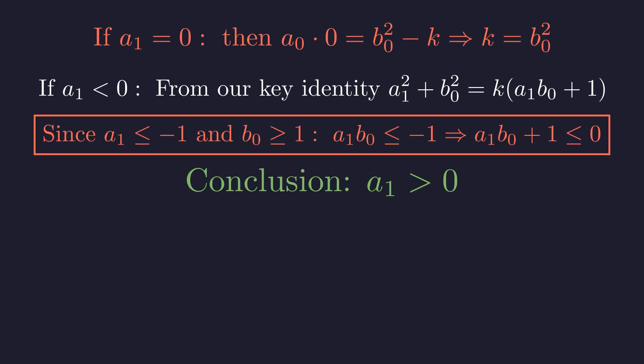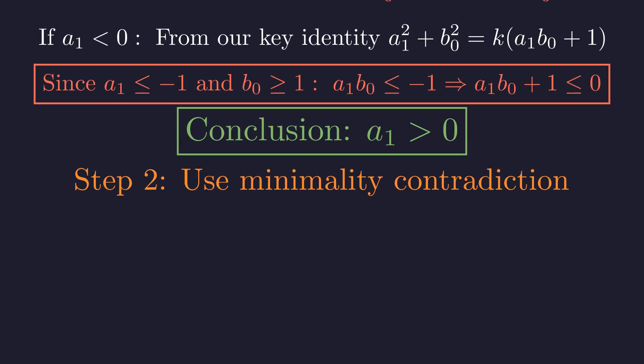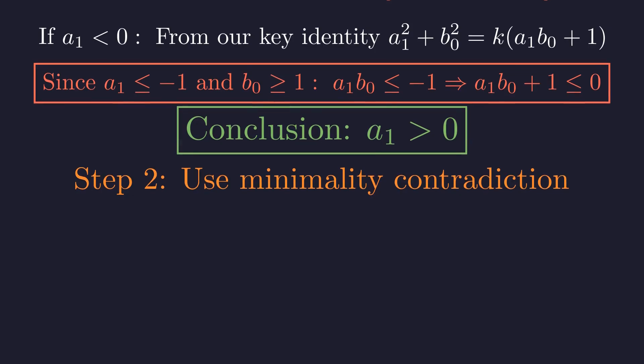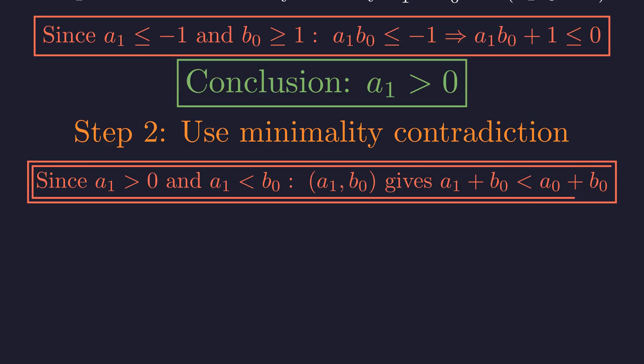Therefore, a1 must be positive. Now we use the fact that a1 is positive, combined with our earlier result that a1 is less than b0. Since a1 is positive and less than b0, the pair a1, b0 is a valid counterexample with the same non-square k, but with sum strictly smaller than our supposedly minimal sum. This contradicts our assumption that a0, b0 was the minimal solution. We've found a solution with an even smaller sum, completing our proof by infinite descent.